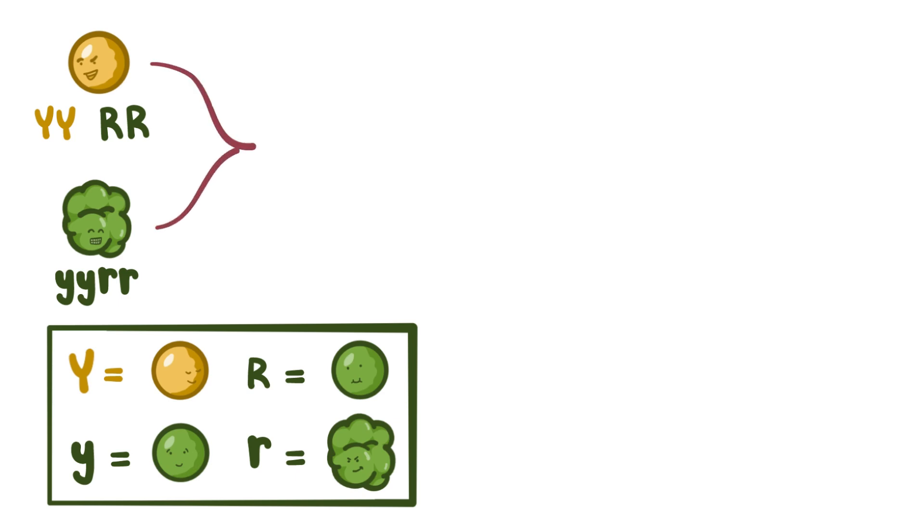Mendel cross-pollinated these two plants, and the result was that all of the plants in the F1 generation got capital Y capital R from one parent, and lowercase y lowercase r from the other parent, and therefore were capital Y lowercase y capital R lowercase r. But then Mendel bred two of these F1 plants with one another, and things got interesting.